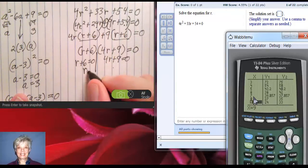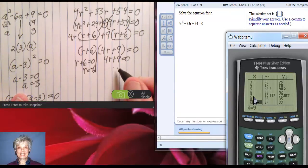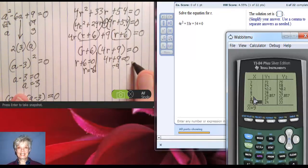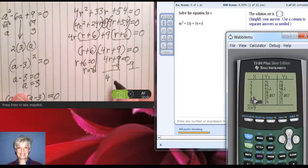There. And then I'll solve each of these little equations. This one will give me r = -6. This one I'm going to have to work at a little bit. I'll subtract 9, and I'll subtract 9. So I'll have 4r = -9, and then divide by 4, and divide by 4, so that r = -9/4.